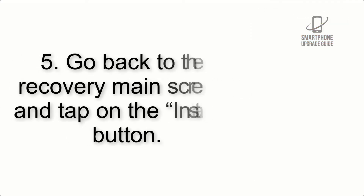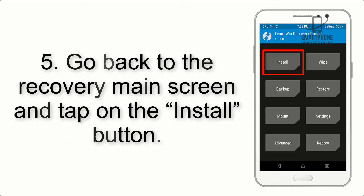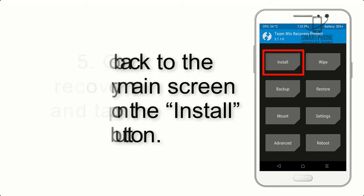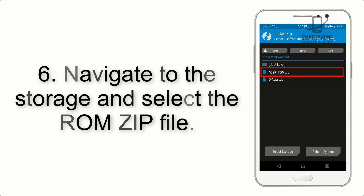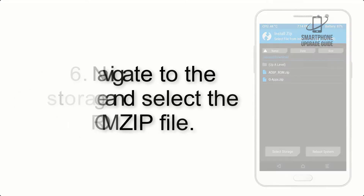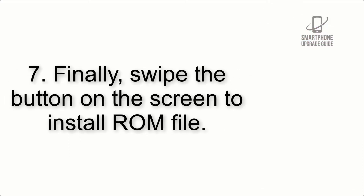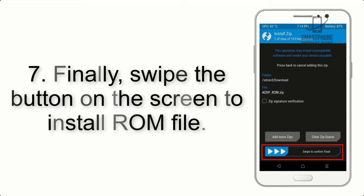Step 4: Swipe the button to wipe the device. Step 5: Go back to the recovery main screen and tap on the Install button. Step 6: Navigate to the storage and select the ROM zip file.